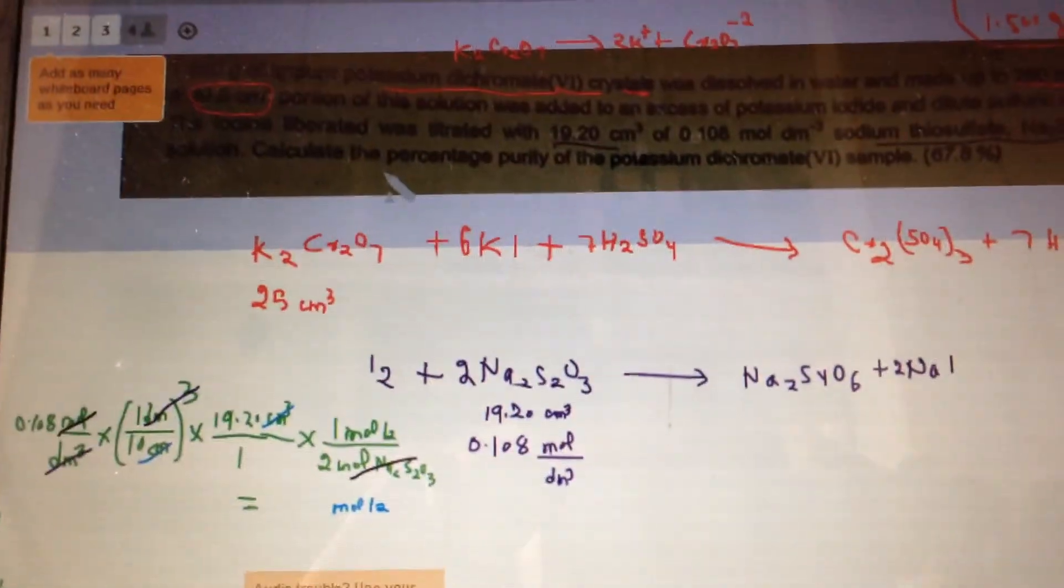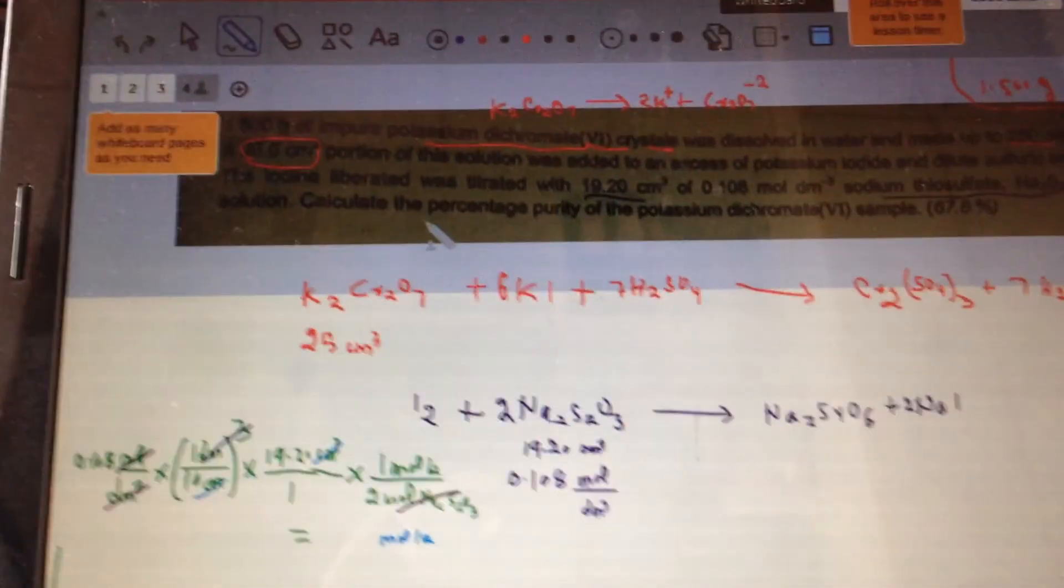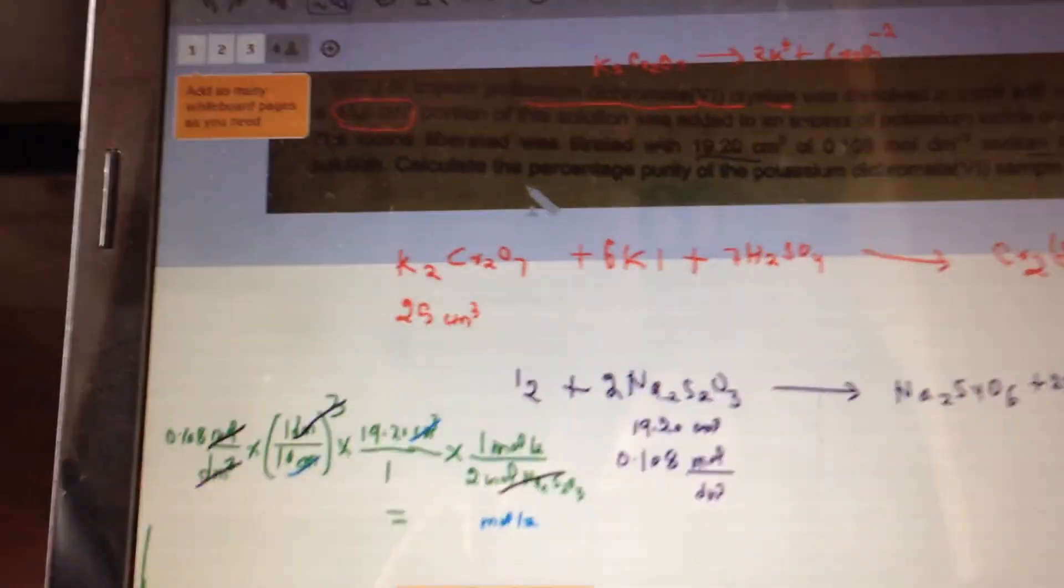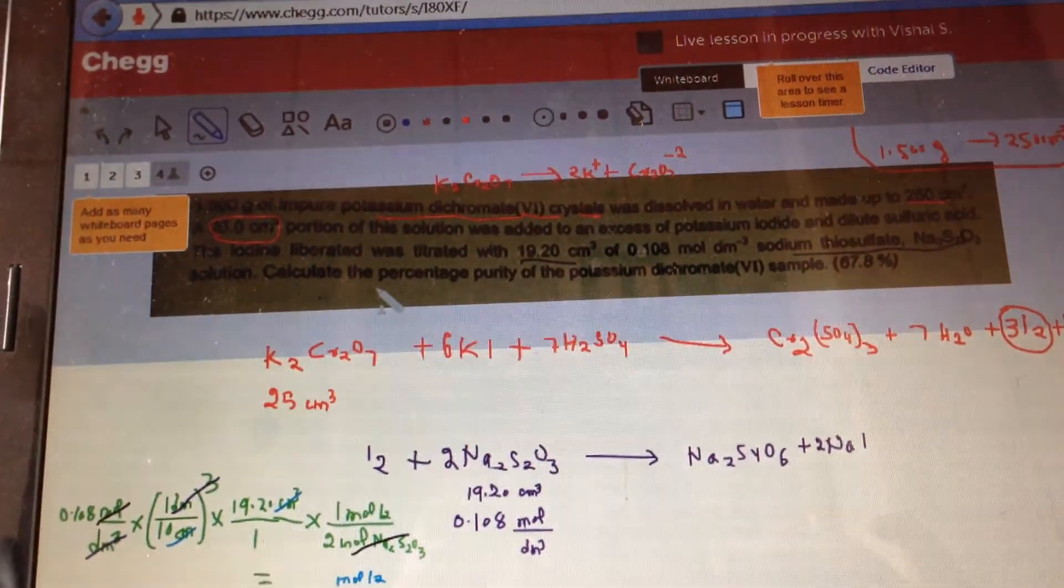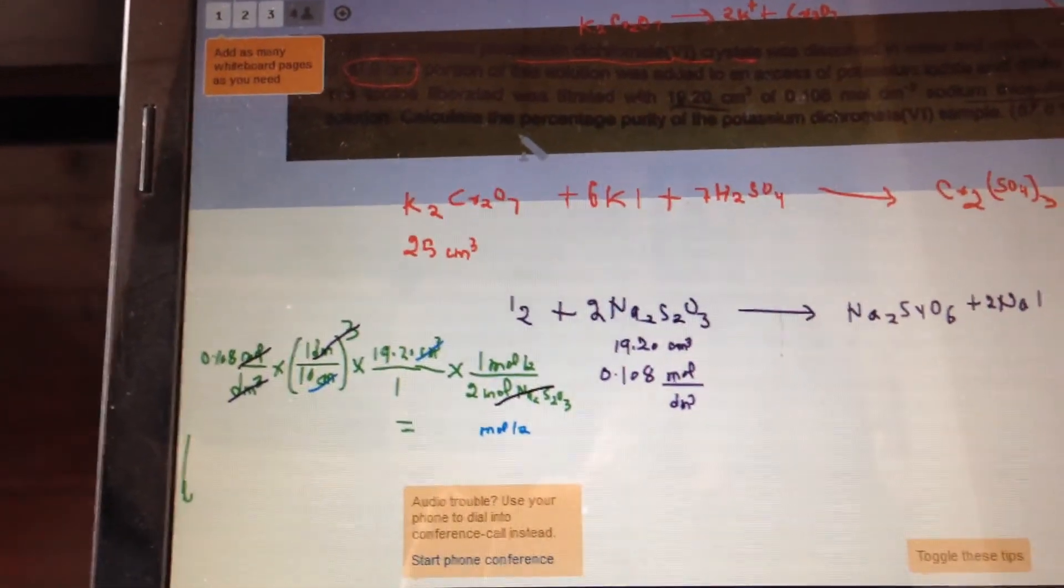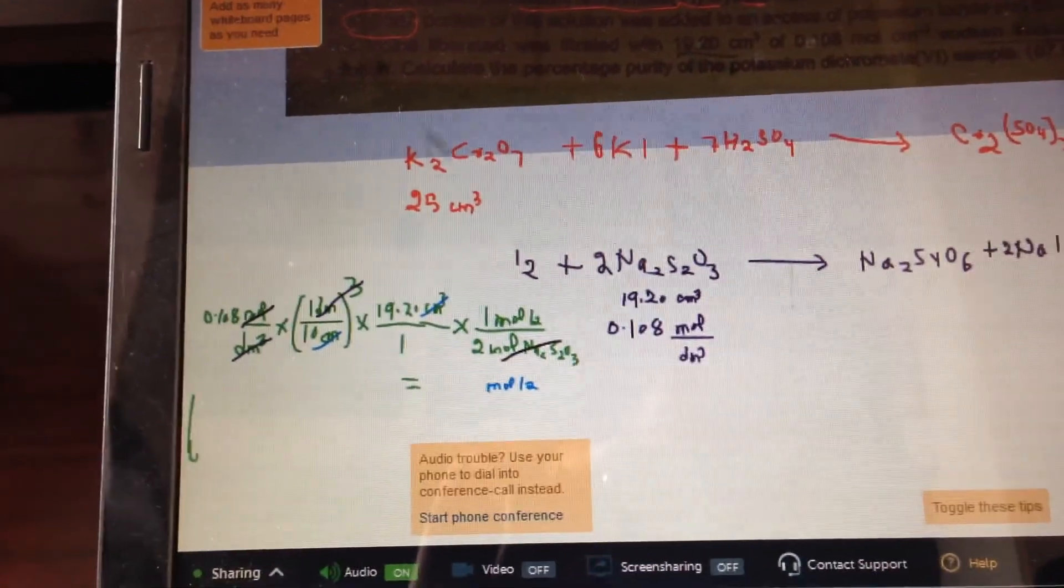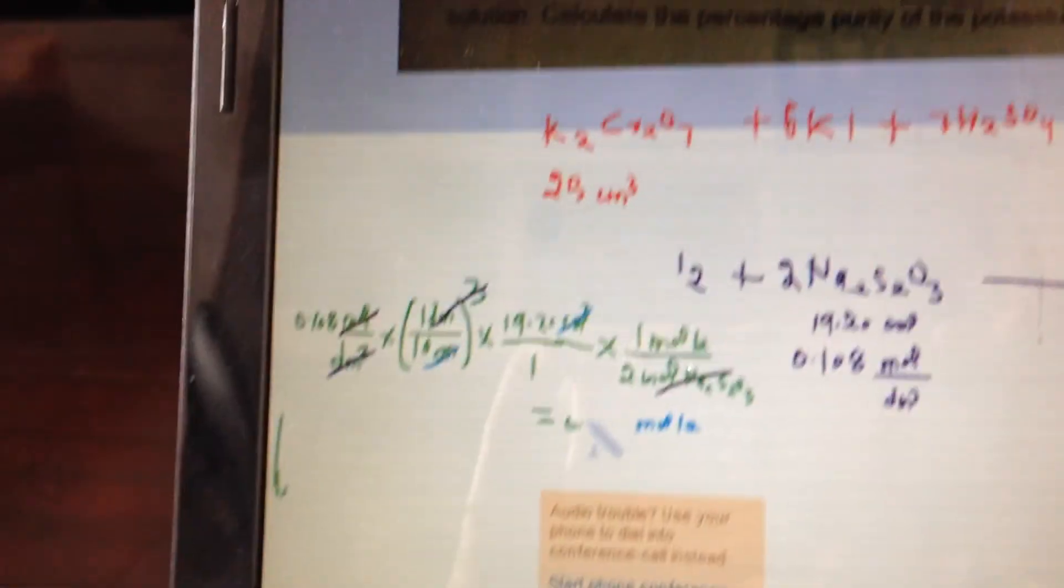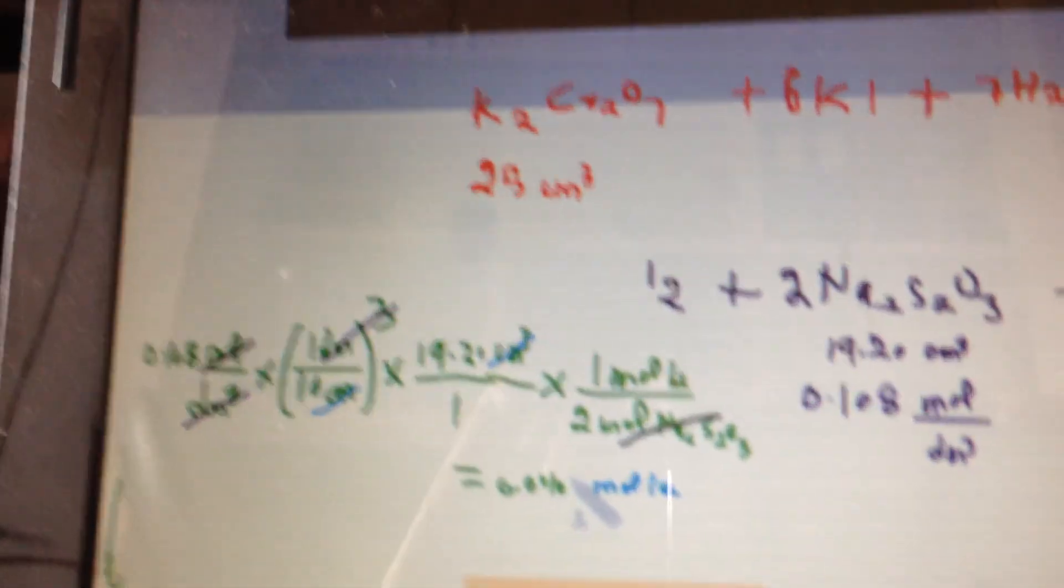All right, so let me do the calculations there. It's going to be 0.108 times 19.20, and then divide by 10 cubed. Make sure you do the 10 cubed there. Okay, and then divide by 2 again. So that comes out to be 0.00104.